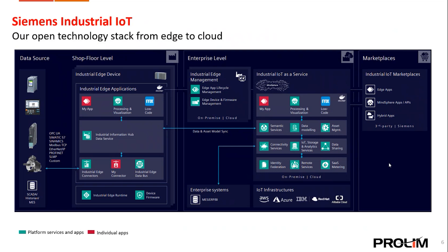The Industrial IoT Marketplace includes Edge apps, Mendix apps, hybrid apps, and third-party applications. These marketplaces offer access to Siemens and third-party apps that can be deployed on Edge or cloud systems, enabling businesses to customize their IoT environment. IoT infrastructure supports various cloud providers including AWS, Azure, IBM, Red Hat, and Alibaba Cloud. The key takeaways are that the Siemens Industrial IoT Stack supports the full journey from shop floor data collection to cloud-based enterprise management, integrates a wide variety of industrial protocols, and offers a flexible platform for Edge processing with an open marketplace for third-party and Siemens applications.